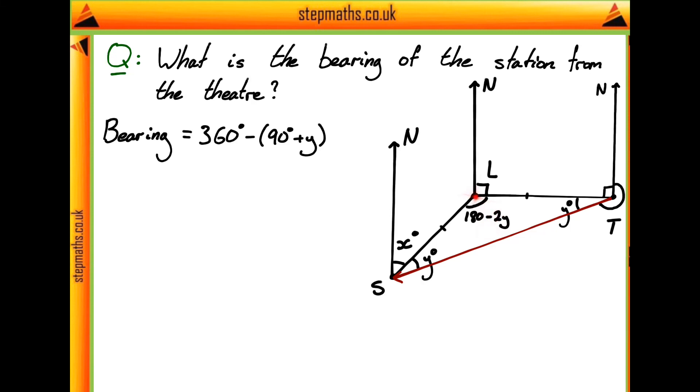For example, we could draw a line from l straight across west here to make a right angle triangle, at which point this angle here is just going to be 90 minus x. Just because we've got 180 degrees in this triangle, 90 here and x here, so this has to be 90 minus x.